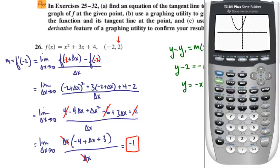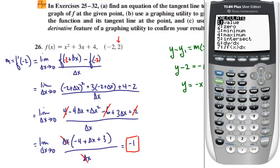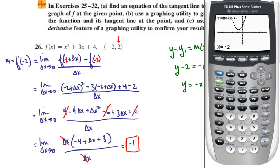Now I want to do something a little different. I go into second, calc. Option 6 says dy dx. I'm going to put in the x value, negative 2. And it will tell me the derivative at negative 2 is negative 1. So that also confirms our results.